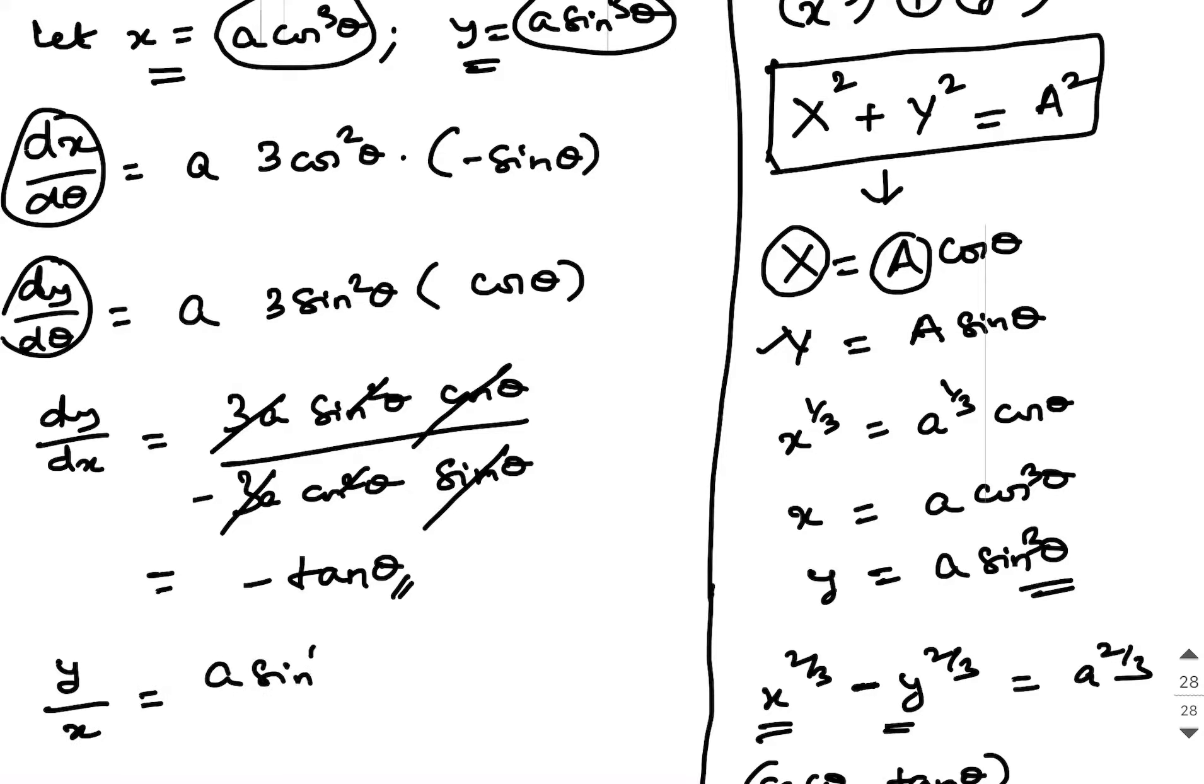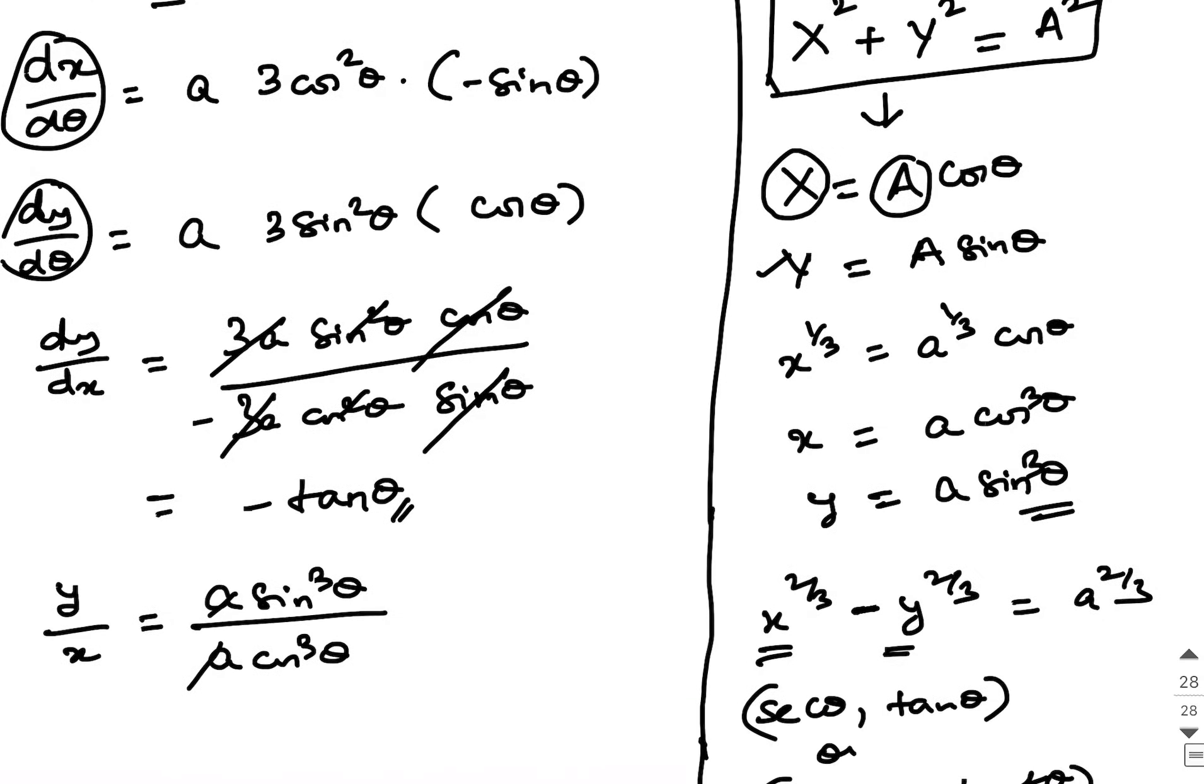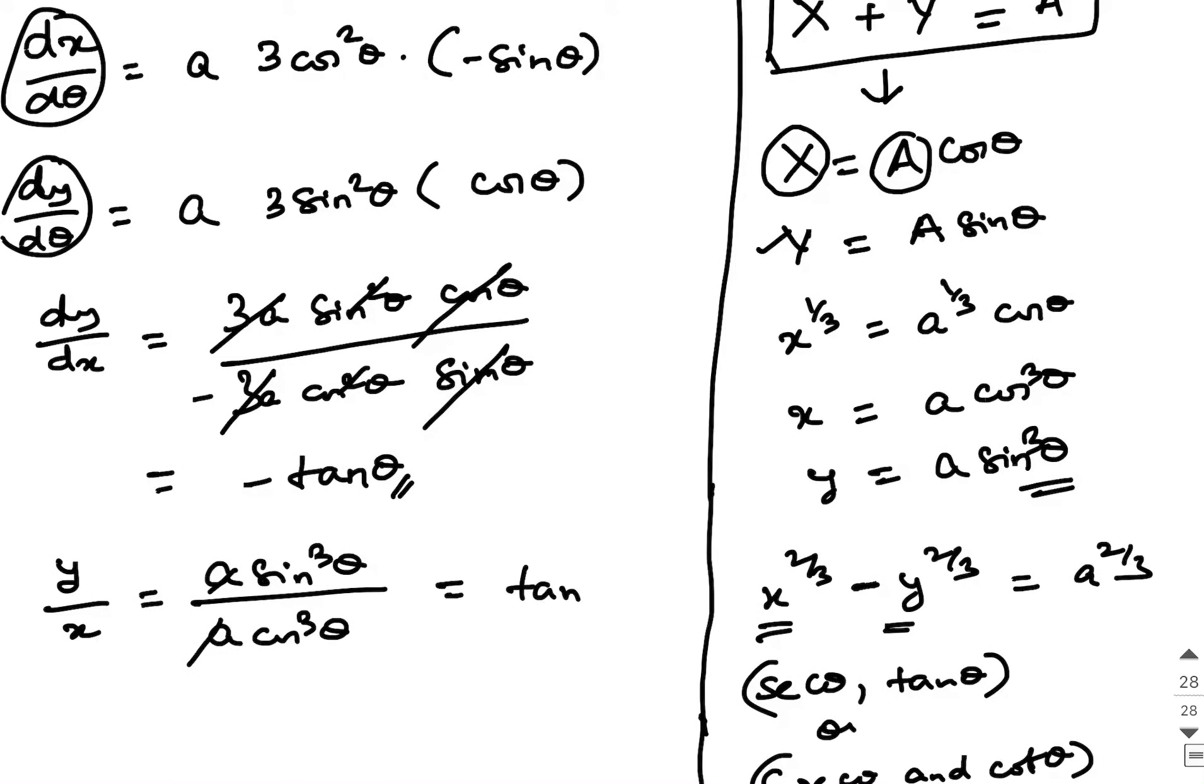We will do A sin cube theta divided by A cos cube theta. A and A will get cancelled. There is going to be tan cube theta. Then what is tan theta?